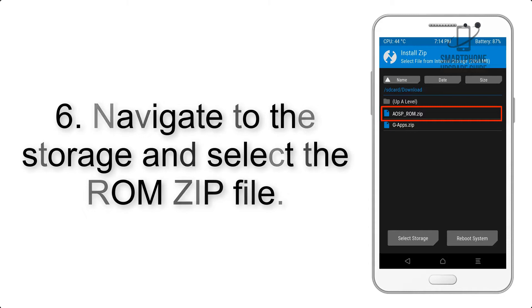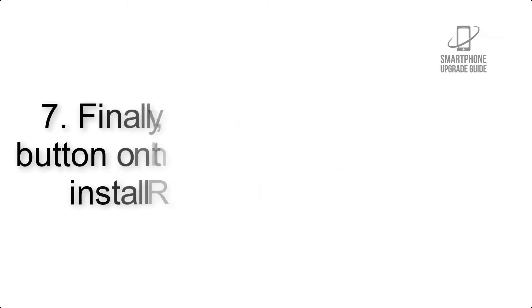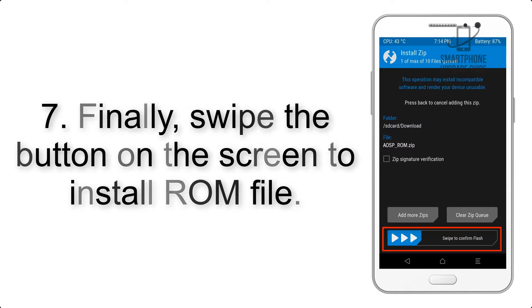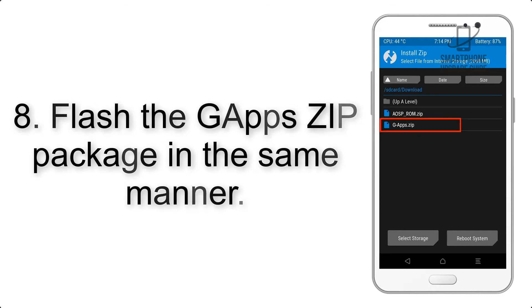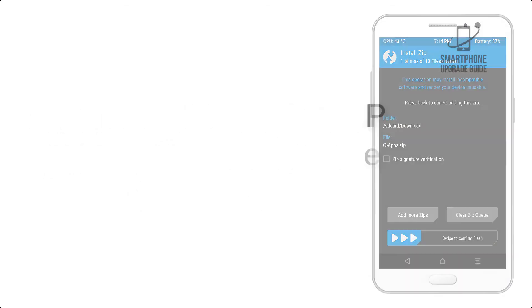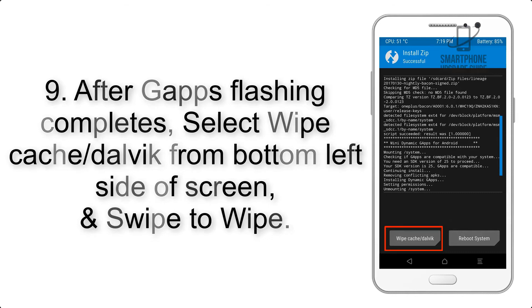Step 6: Navigate to the storage and select the ROM zip file. Step 7: Finally, swipe the button on the screen to install the ROM file. Step 8: Flash the GApps zip package in the same manner.